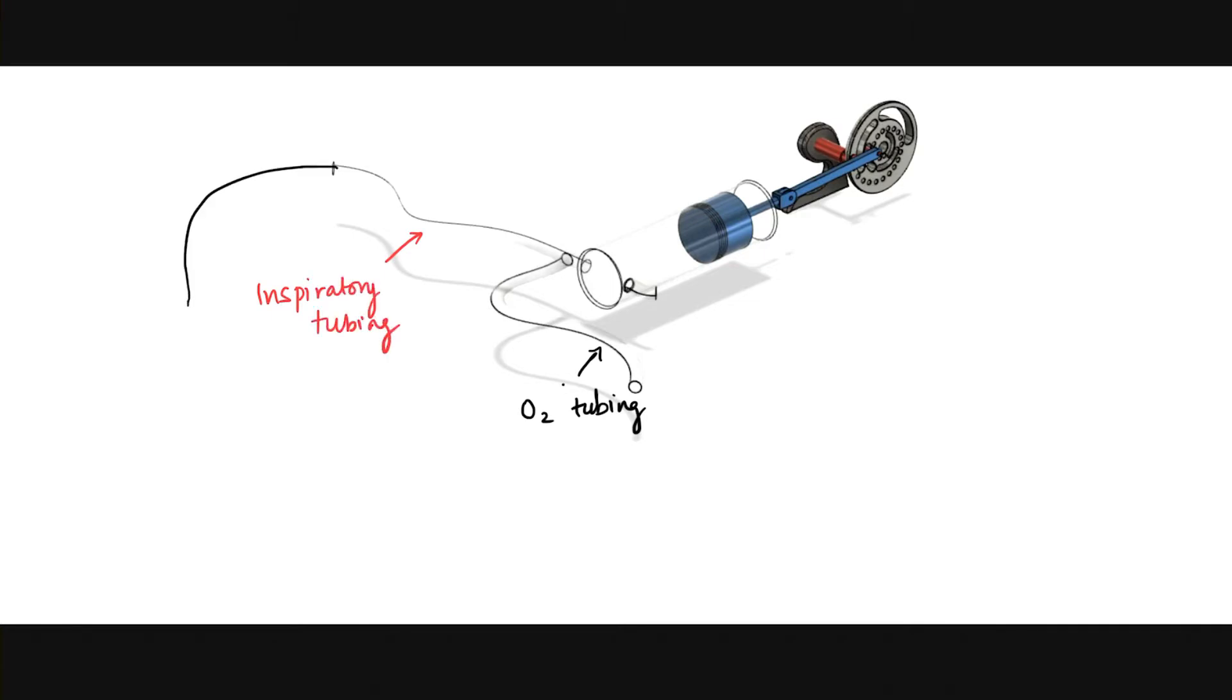Now we will talk about the ventilator circuit. The ventilator's outflow, which is an inspiratory tubing, is connected to the oxygen tubing. In turn, the inspiratory tubing is connected to the endotracheal tube at the patient's end by a Y-joint. It has a valve on the inspiratory tubing side.